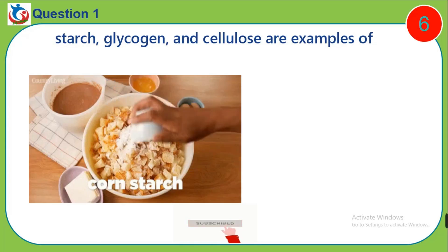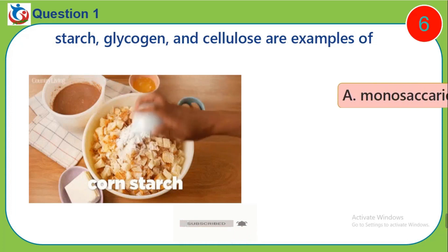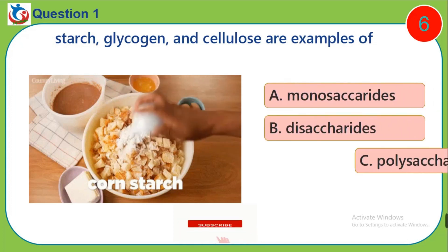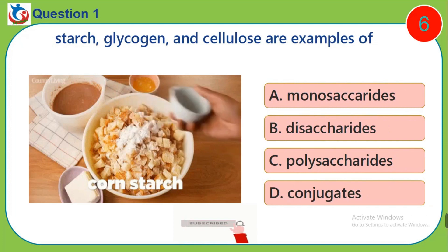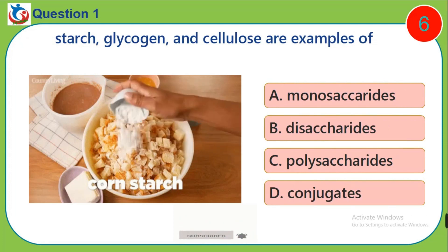Question 1. Starch, glycogen and cellulose are examples of: A. Monosaccharides, B. Disaccharides, C. Polysaccharides, D. Conjugate.